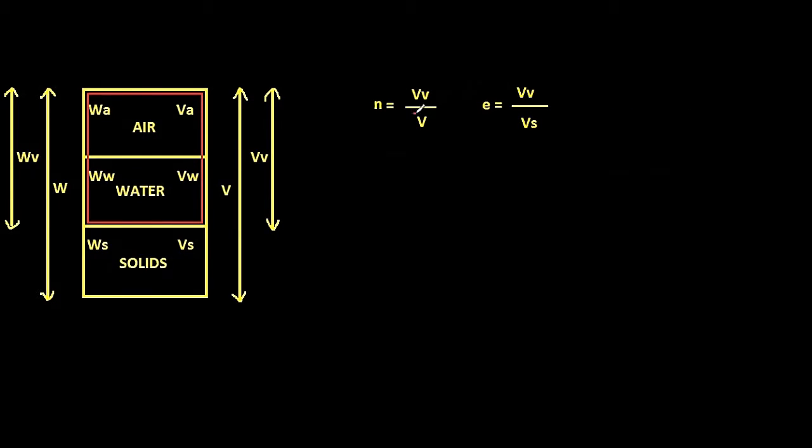Now observe the difference between these two. Porosity has total volume in the denominator, whereas void ratio has volume of solids in the denominator. People often get confused with porosity and void ratio formulae.